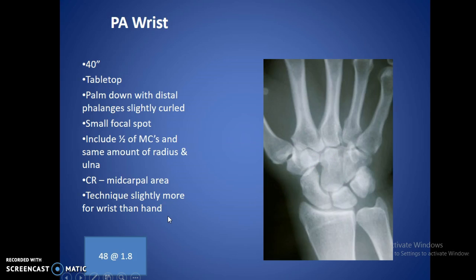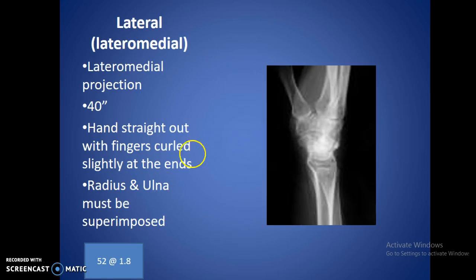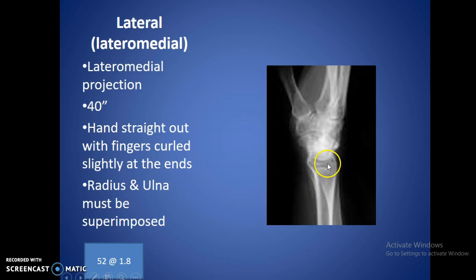For the PA oblique wrist, just a 45-degree oblique with the thumb side up, just like the hand. CR is at the midcarpal area again. You can use a sponge, but most patients can hold this position unless they're in a lot of pain. For the lateral wrist, it's a lateromedial projection — the beam goes through the lateral portion and exits the medial portion from the anatomic position. Hands straight out, fingers curled slightly at the ends just to relax it. The radius and ulna must be superimposed — if you want to confirm a good lateral wrist, you need to see those two bones right on top of each other.